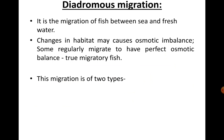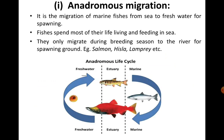Diadromous migration is the migration of fish between sea and fresh water. Changes in habitat may cause osmotic imbalance because they move from saline water to fresh water. Some fish regularly migrate to maintain perfect osmotic balance, which is a key characteristic of a true migratory fish. This movement between sea and fresh water is of two types: anadromous migration and catadromous migration.